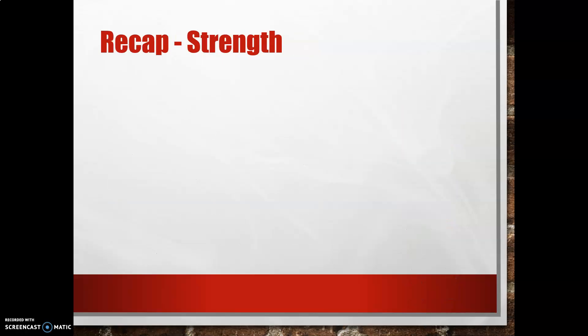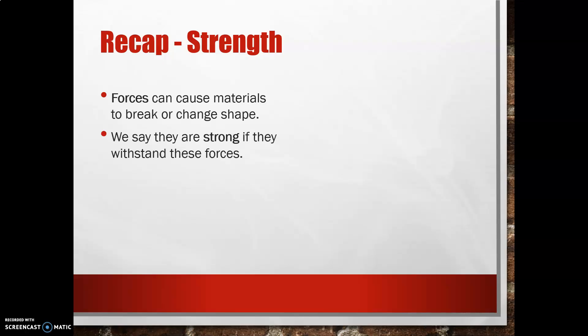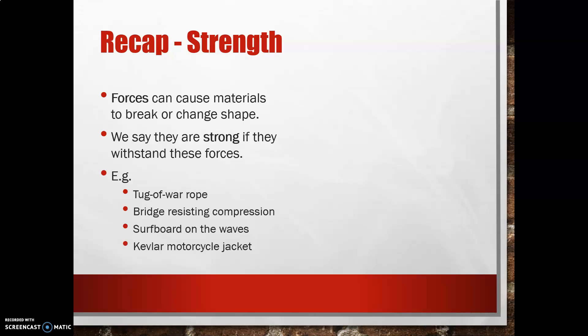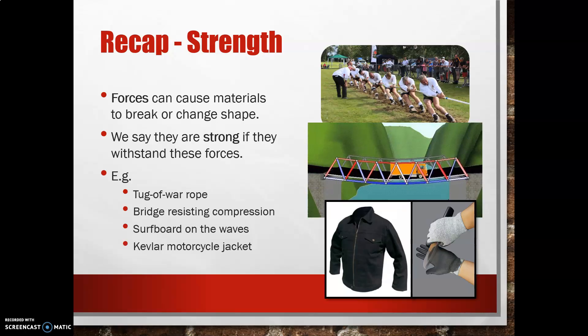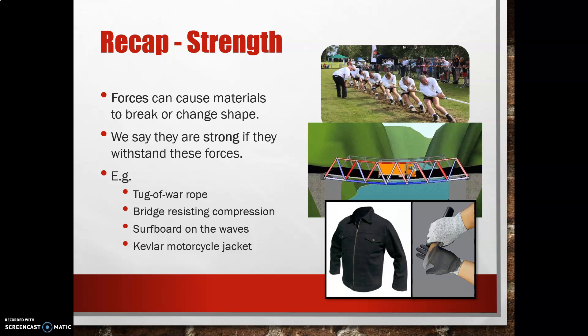When we looked at material properties in the other video that I'll link to, one of the topics we looked at was strength or things being strong. Forces can cause materials to break or change shape with the application of force — if you were to hit it, for instance. We say they are strong if they can withstand these forces. Examples include a tug-of-war rope, a bridge resisting compression, a surfboard on the waves, or a Kevlar motorcycle jacket.